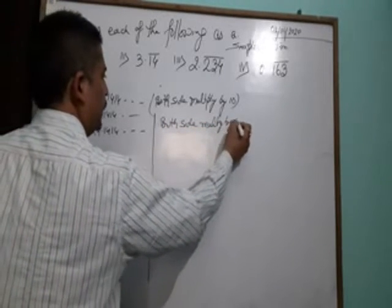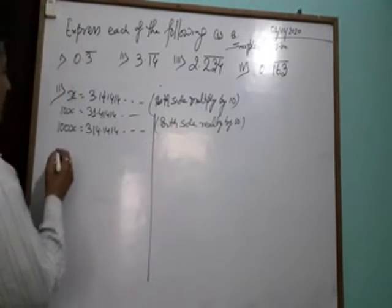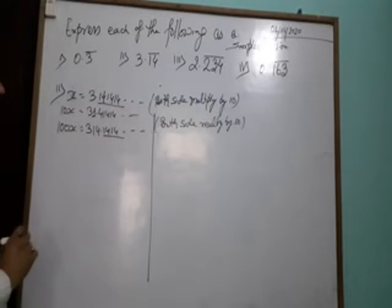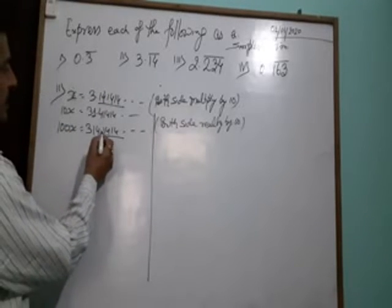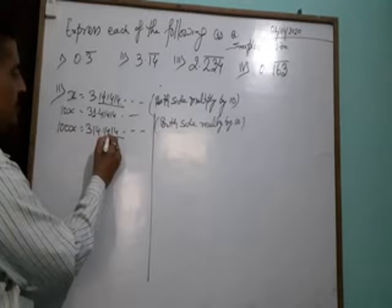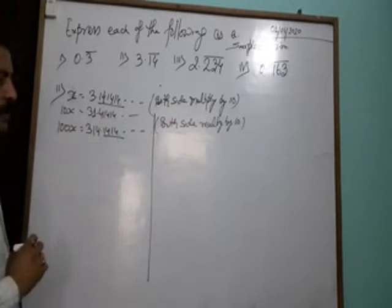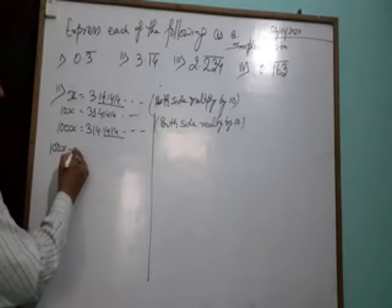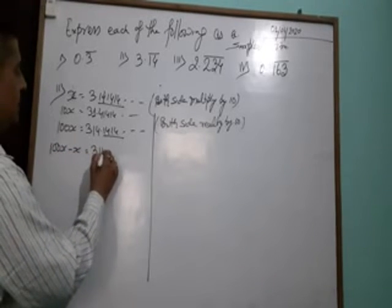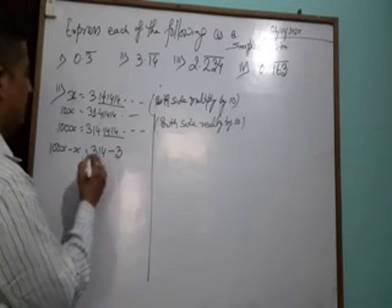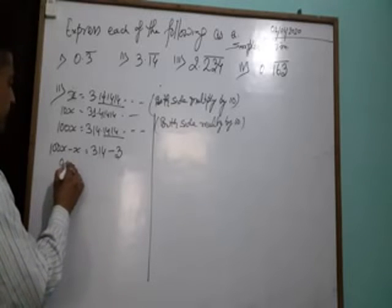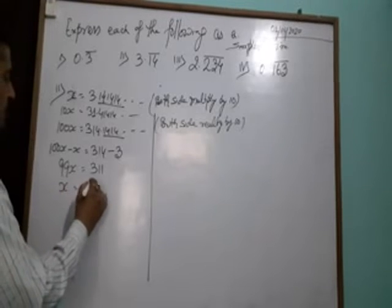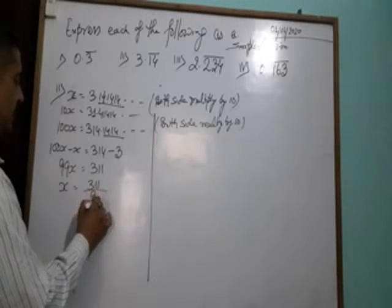Multiply by 10 again, then check it. The decimal parts are equal, 14.1414 repeating. Then the difference: 100X minus X equals 314 minus 3. So 99X equals 311, so X equals 311 by 99.